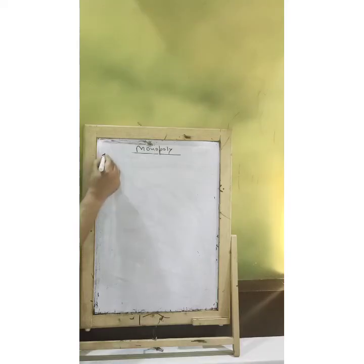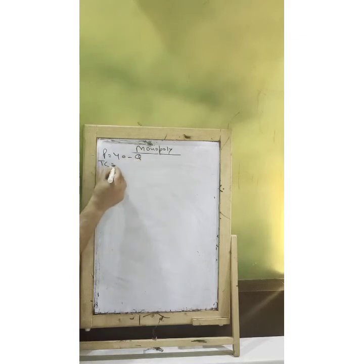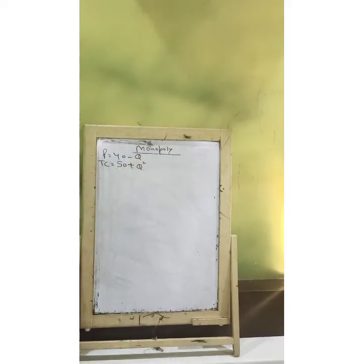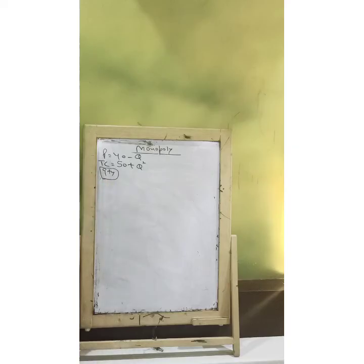Let us start. Suppose we have a price function and that price function is 40 minus Q. We also have total cost which is 50 plus Q squared. Now, suppose I want to solve equilibrium quantity here. In the last lecture, I told you that there are two ways to solve equilibrium quantity: one is MR equals MC approach and the second approach is you take the profit function and maximize that with respect to quantity.